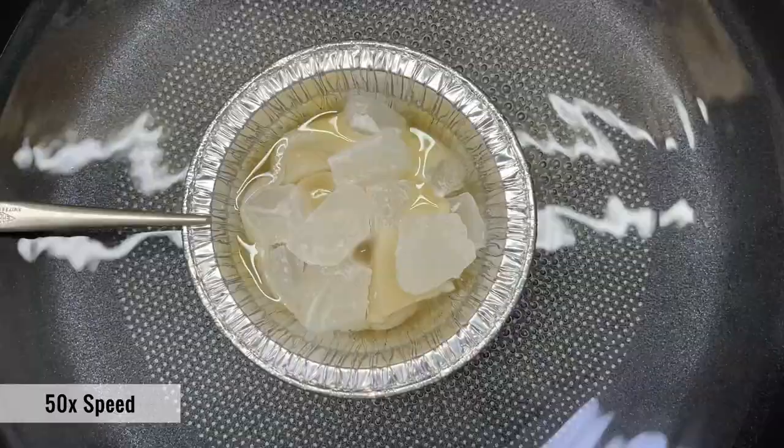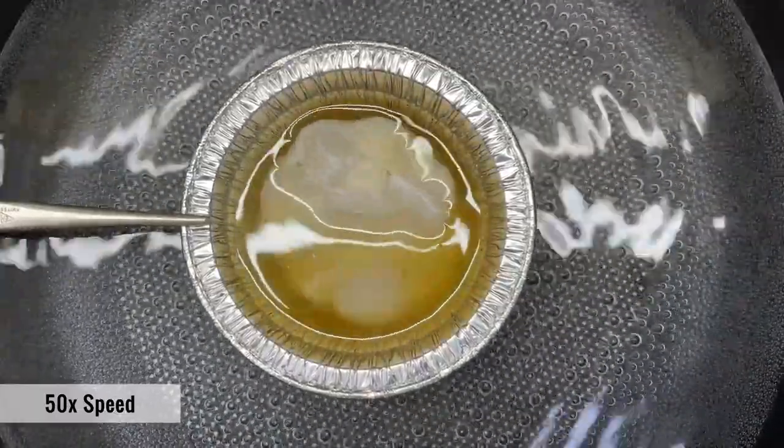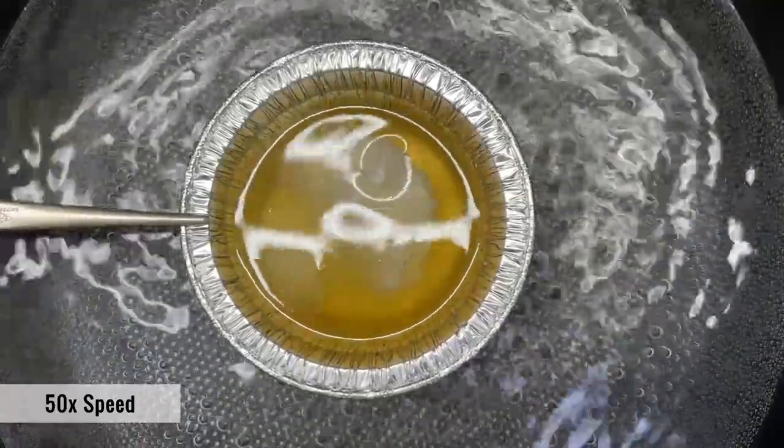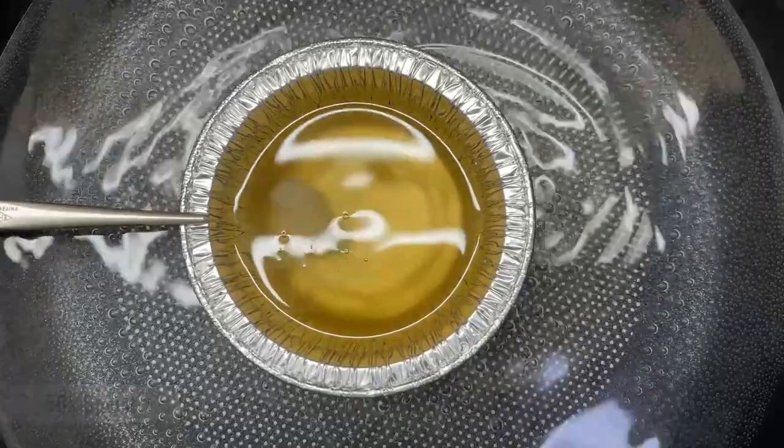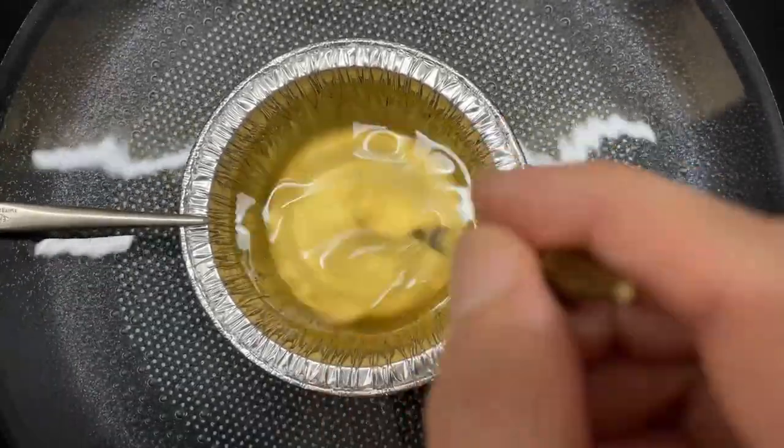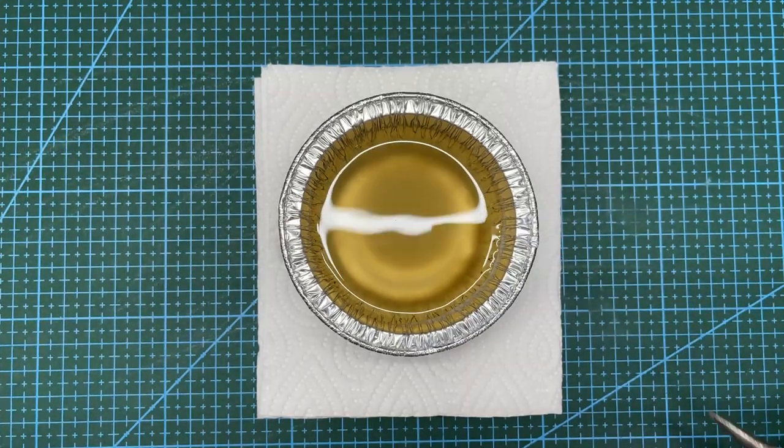The melting points of both waxes are around 50 to 60 degrees Celsius, so the water does not need to be boiling. Leave the mix in the hot water bath until the waxes are completely melted. Stir the mix until it is uniform, then remove it from the heat and allow it to cool down and re-harden.